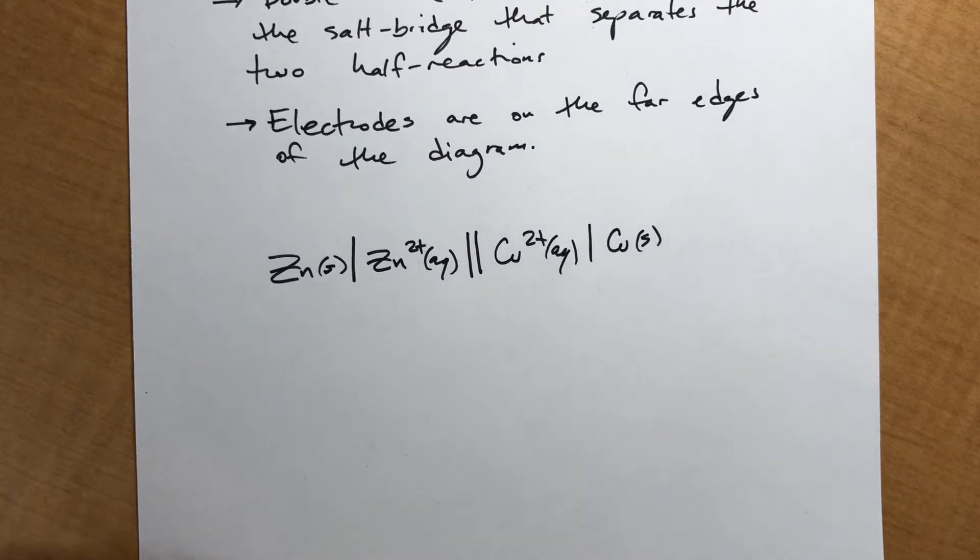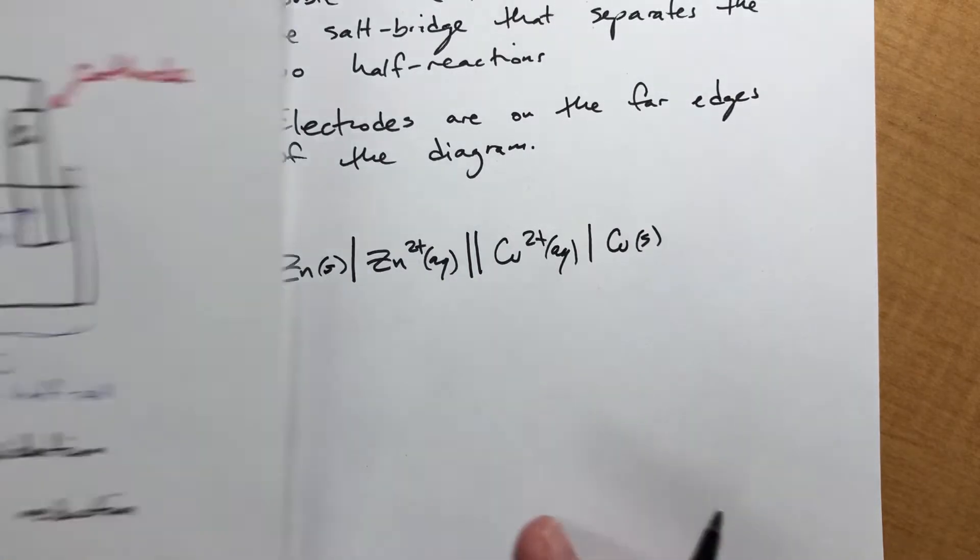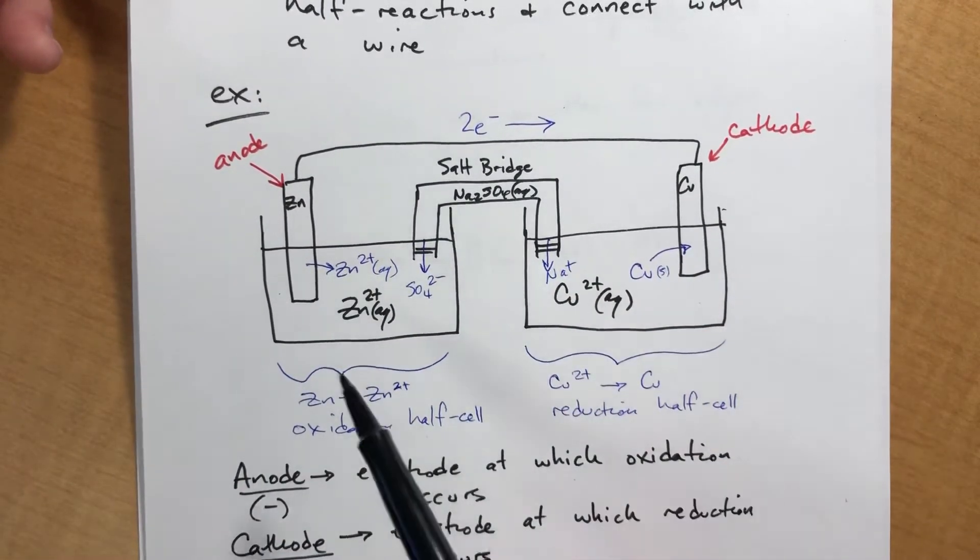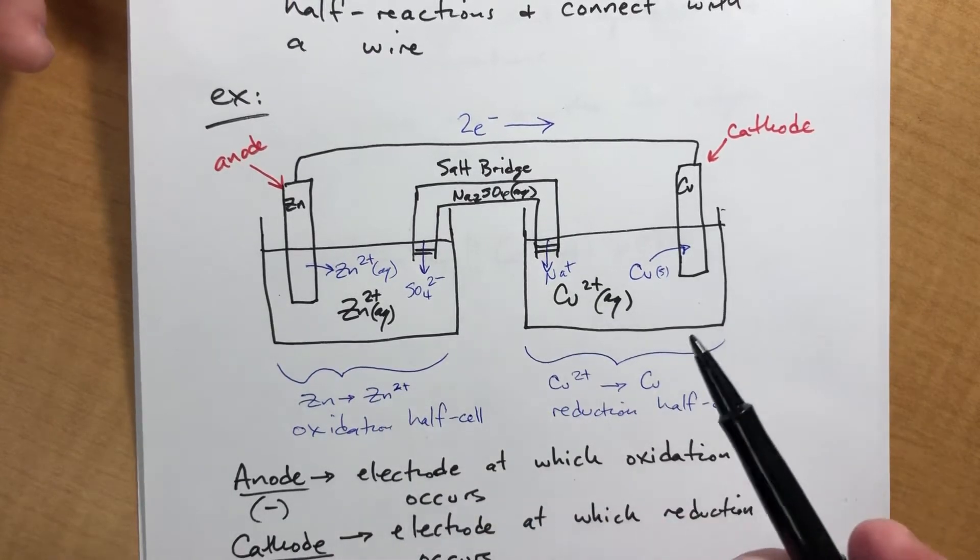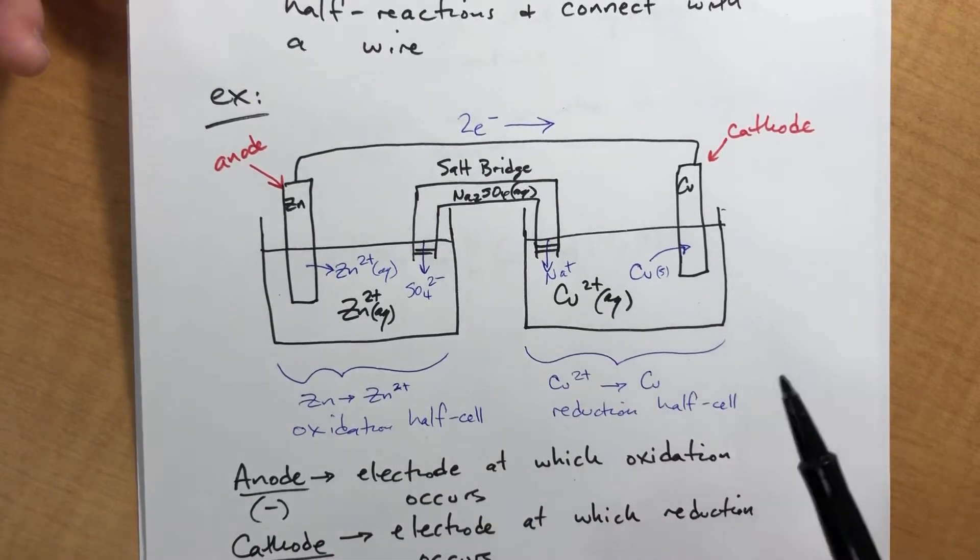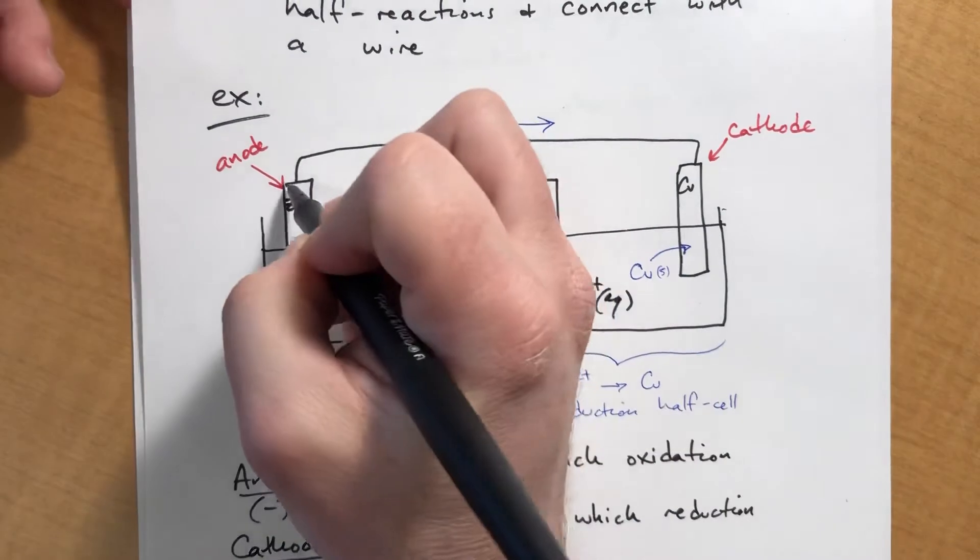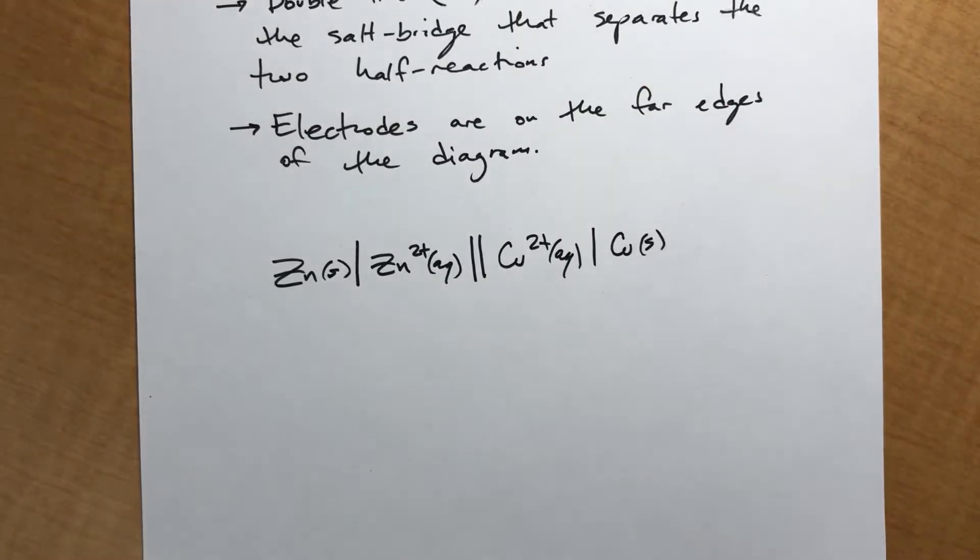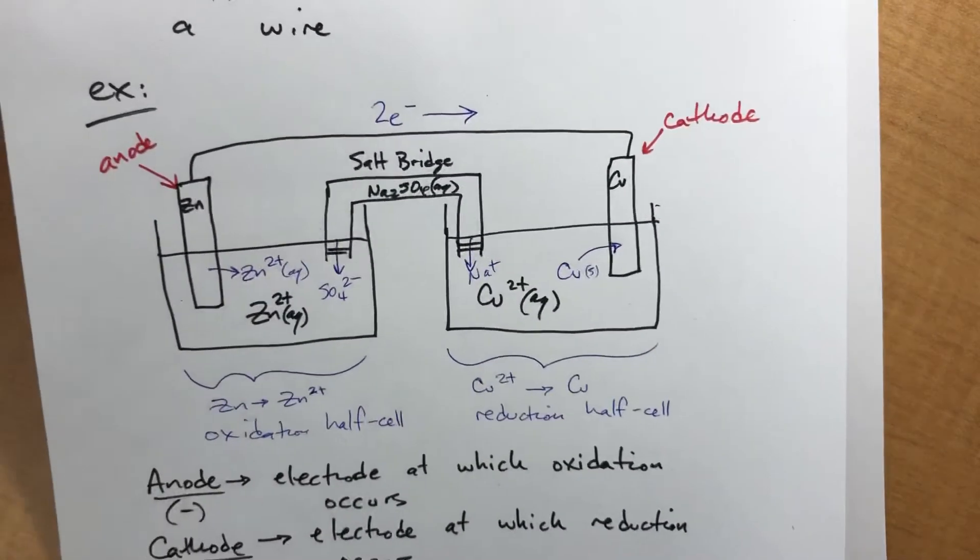So this is what our cell diagram for this voltaic cell would look like. Obviously, this gives us significantly more details, but it's a significantly more difficult drawing. It requires way more artistic skill. I'm not even saying mine is good, but it takes a lot more work than this. But this represents the exact same thing.